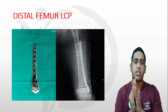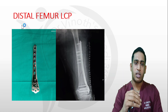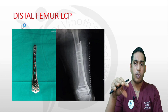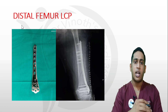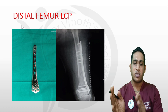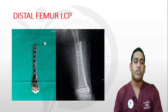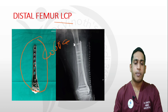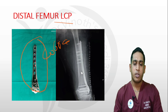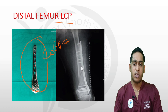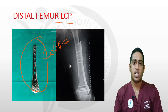Now the distal femoral LCP — Locking Compression Plate — used for distal femoral fractures. This plate is also called the cobra plate because it resembles the hood of a cobra. As seen on the X-ray, for a distal femoral shaft fracture, the plate is applied using a bridge plating technique with a minimally invasive approach — no screws at the fracture site itself.